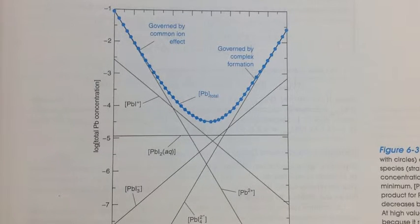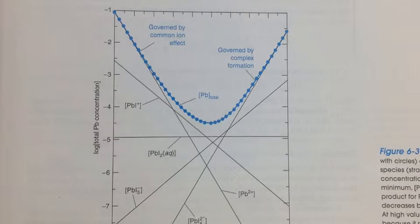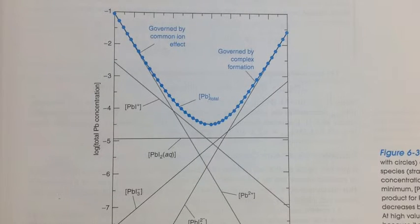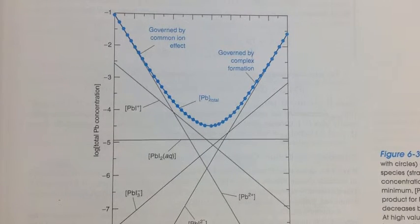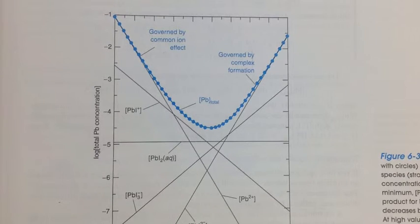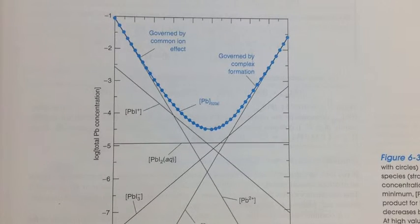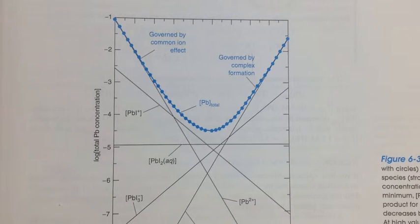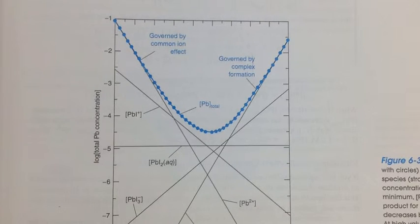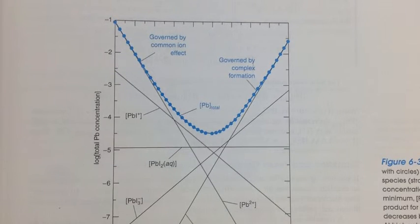If the concentration of I- is known, then the concentration of PB2+ can be calculated by substituting that into the equilibrium constant expression. Therefore, if a concentration of PB2+ is known for one equilibrium, it must satisfy all equilibria for that solution.